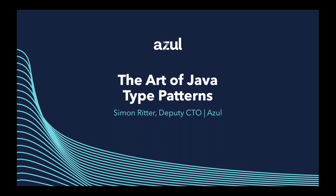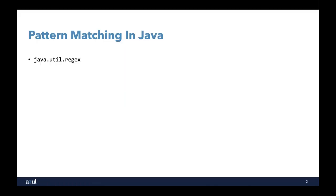The idea of this webinar is to talk about the art of Java type patterns. We're going to talk about some of the newer features in the Java language, and also some ideas that may be included in future versions of Java, all around the idea of patterns. So first thing: pattern matching in Java.